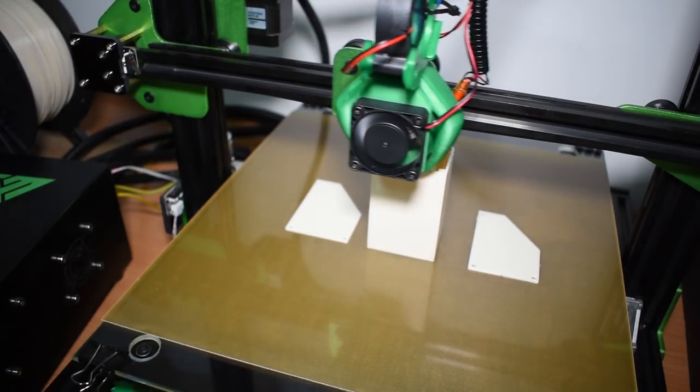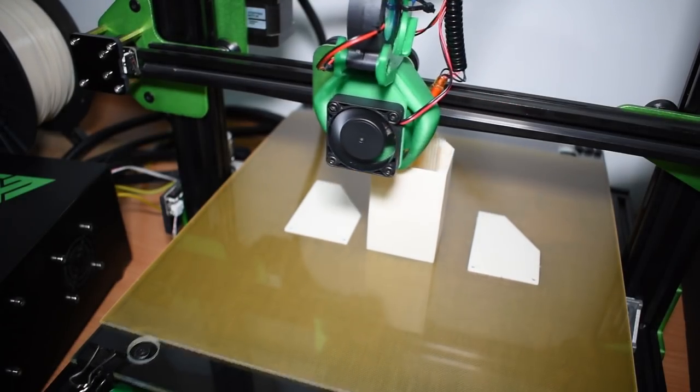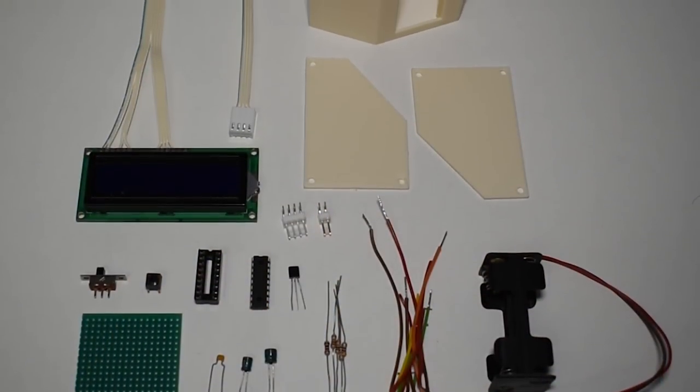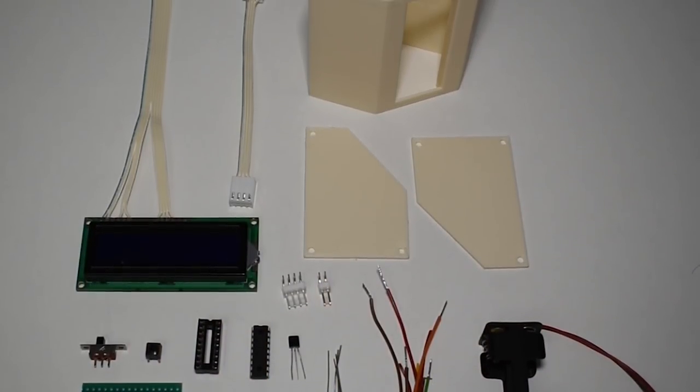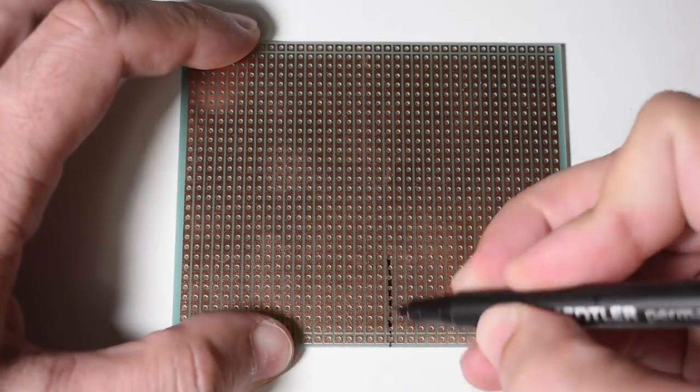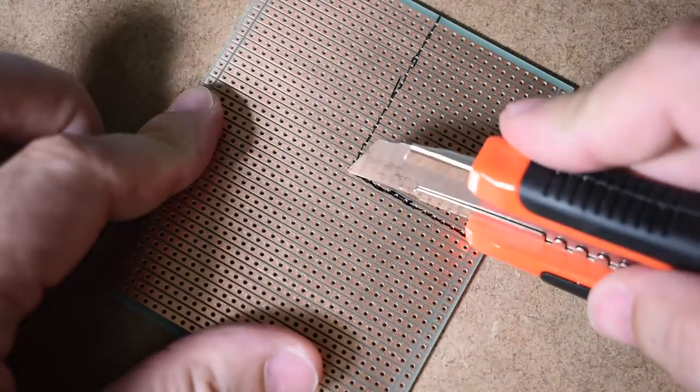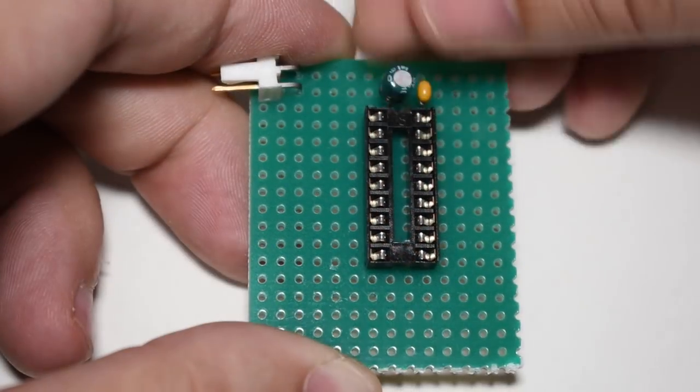While making the circuit, load the STL and let the printer make the enclosure. Now grab all the parts and let's build the circuit. Start by cutting a small square from the strip board and place the components following my schematics.